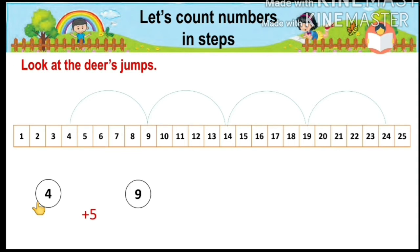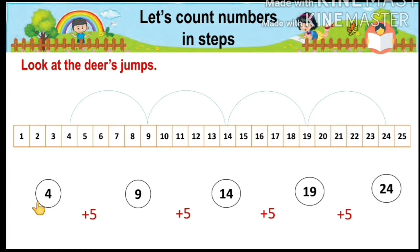Adding five steps to number four we get nine, again adding five steps we get fourteen, again adding five steps we get nineteen, again adding five steps we get twenty-four. So the sequence is: four, nine, fourteen, nineteen, and twenty-four.